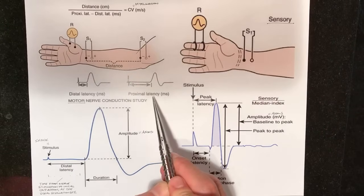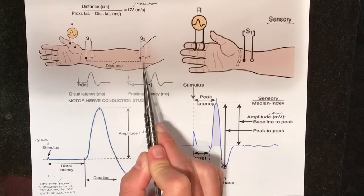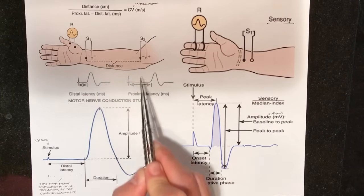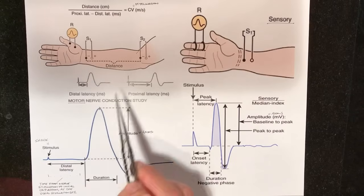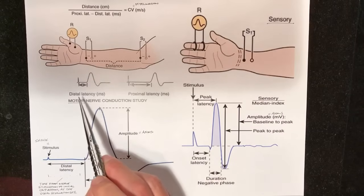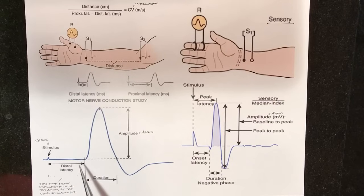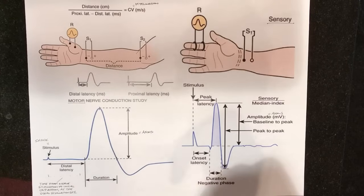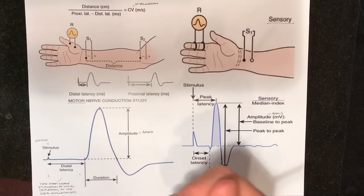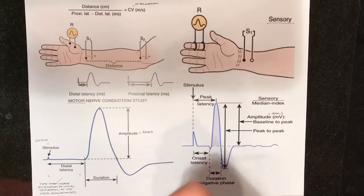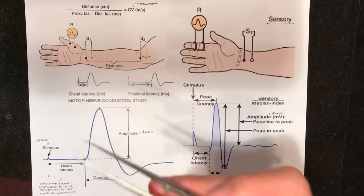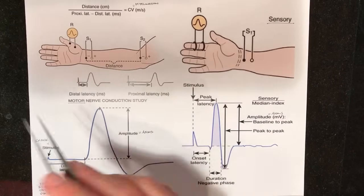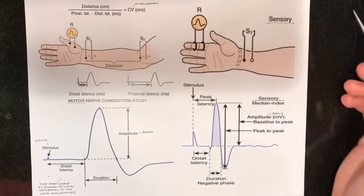The proximal latency is the time from the stimulus to the initial deflection at the recording electrode, and the same concept applies to distal latency, which is most commonly reported in nerve conduction study reports. This gives you information on how much myelin is present, if there's any demyelination going on, or if there's any potential nerve injury.